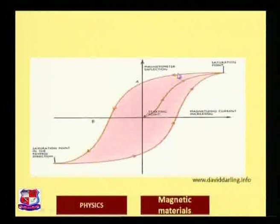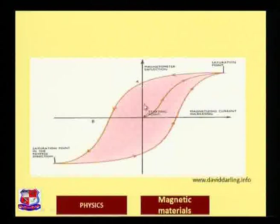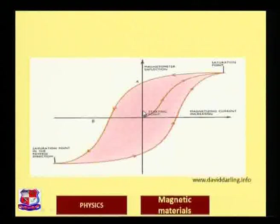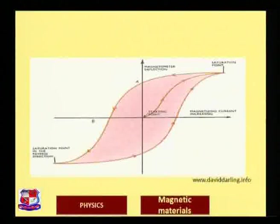If we decrease the magnetic field, we get a change in magnetic flux density, and at a particular point we get the remnant point — called the remnant field. Even if the applied magnetic field becomes zero, the remnants of the magnetization remain, and that value is called the retentivity of the material.